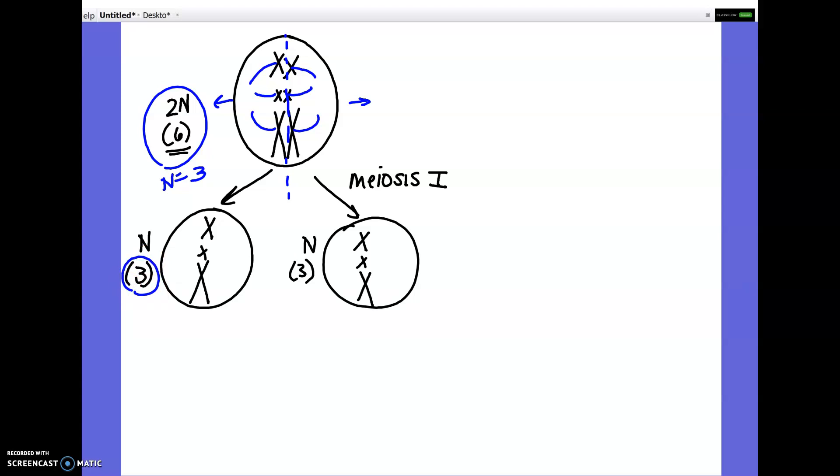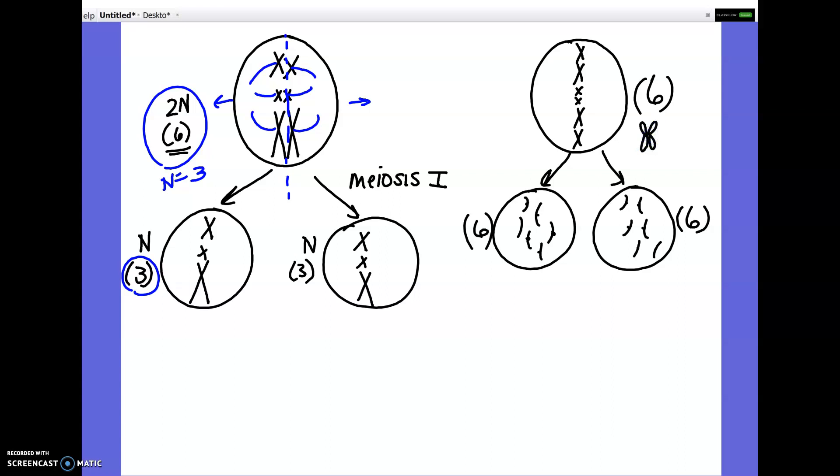Now, had this been mitosis, just a reminder of how that would look different, in mitosis, these six chromosomes would have lined up 1, 2, 3, 4, 5, 6, straight down the middle, and the X's would have split in half. So you would have ended up with 1, 2, 3, 4, 5, 6 little sticks here, and 1, 2, 3, 4, 5, 6 little sticks here. So we started with 6 chromosomes. Each of these still has 6 chromosomes.